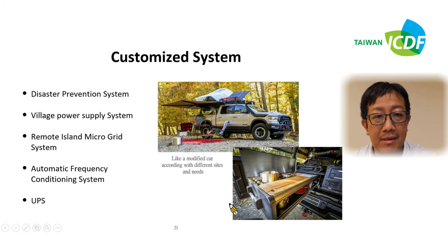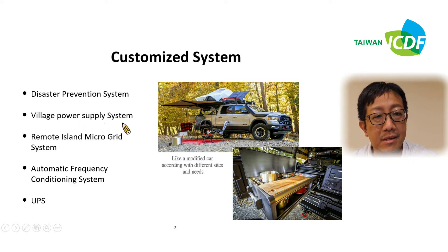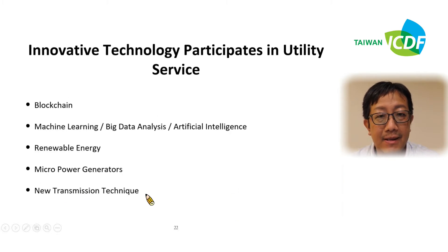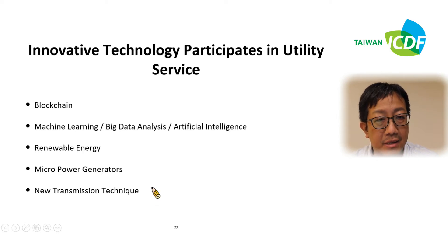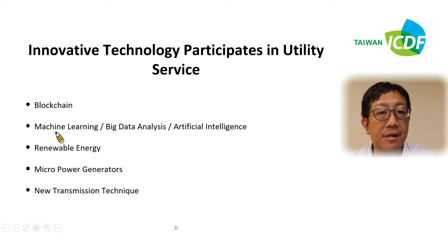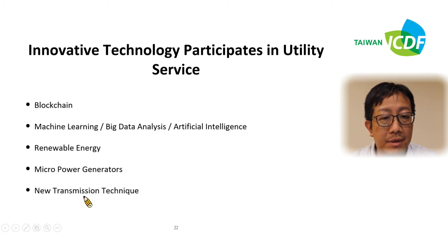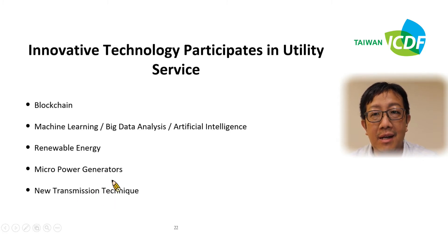Now let's talk about the customized systems. We have the disaster prevention system, the village power supply system, remote island microgrid system, automatic frequency conditioning system, and of course the UPS. Innovative technologies are now participating in utility services, including blockchain, AI technologies like machine learning and big data analysis, renewable energy, microgrid generation, micro power generators, and new transmission techniques.